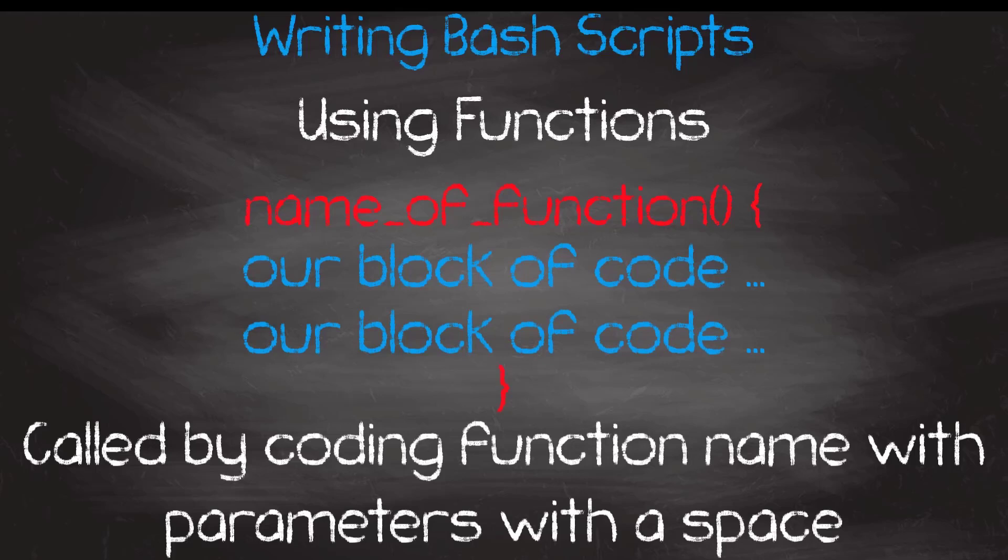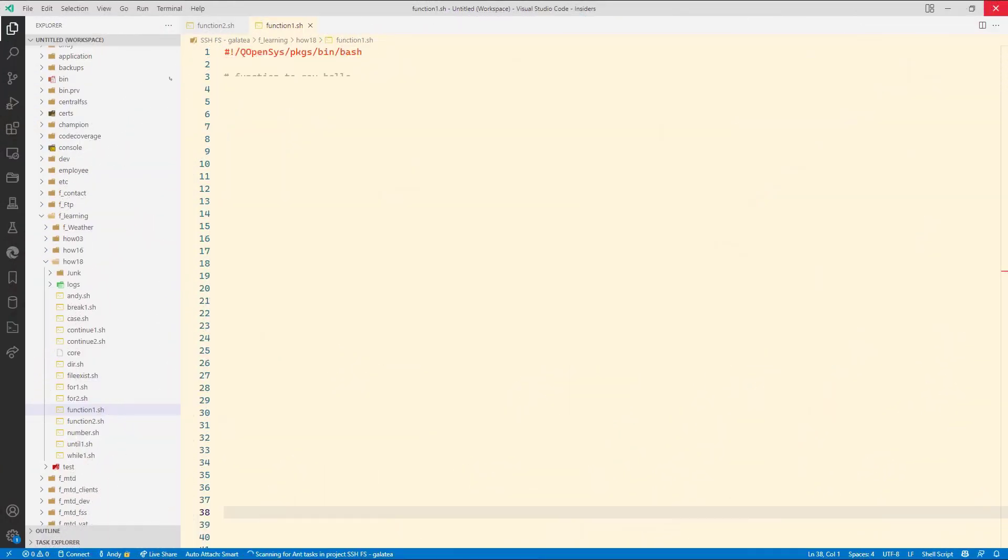Let me show you the coding of a function in a quick example. The first function. Function hello curly braces. A quick hello to say where we are. And the next line of return. This is optional. I always like to have it coded. Again, your choice.